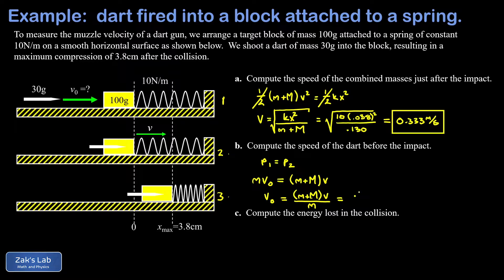The combined masses was a total of 130 grams or 0.130 kilograms. The mass of the dart, that's 0.030 kilograms. The speed of the combined masses after the collision, we computed that in part A, 0.333 meters per second. When we run the numbers to three significant digits, we get 1.44 meters per second for the initial velocity of the dart.